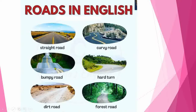The third image shows a road that goes down, up, down, up — such a road is known as a bumpy road. It's also found in a hilly area where there is no proper surface, making it a bumpy road.